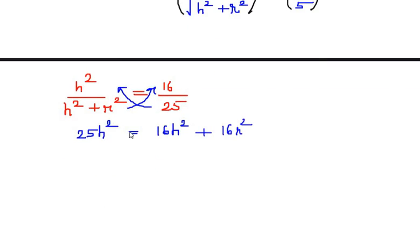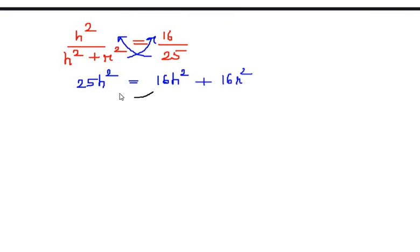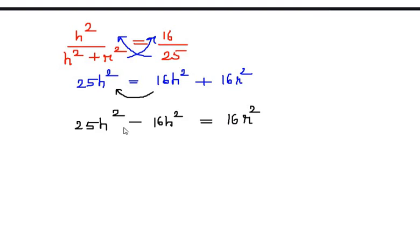Cross-multiplying gives 25h² = 16(h² + r²) = 16h² + 16r². Gathering like terms: 25h² − 16h² = 16r², so 9h² = 16r².